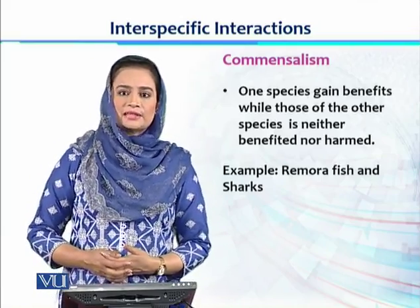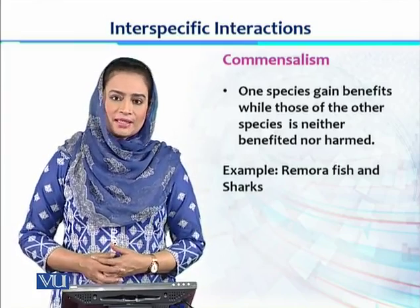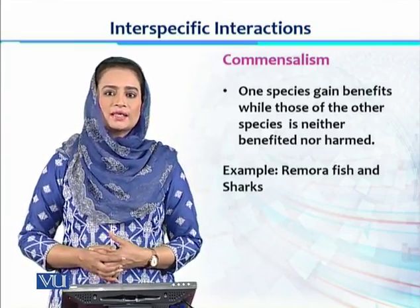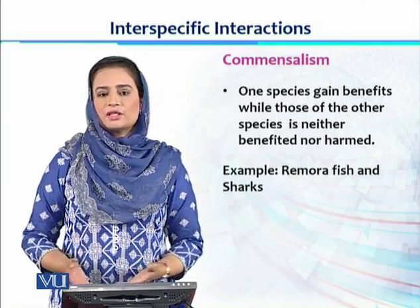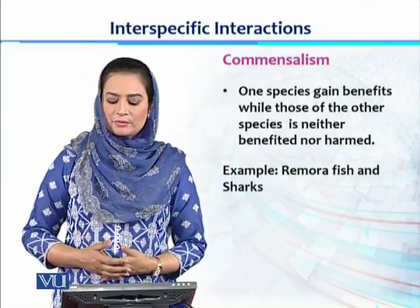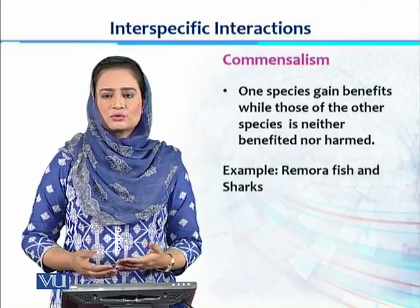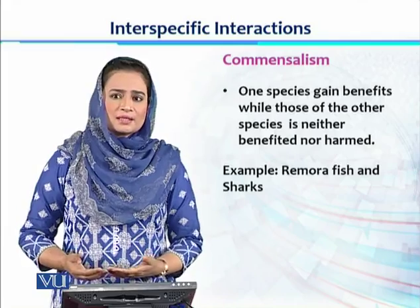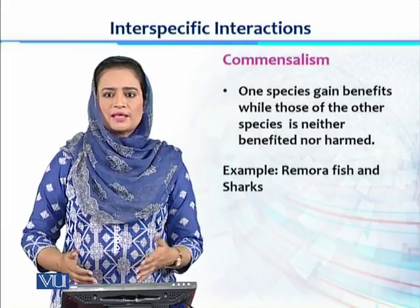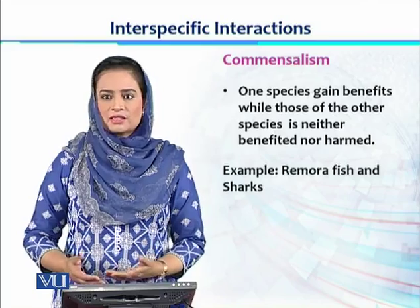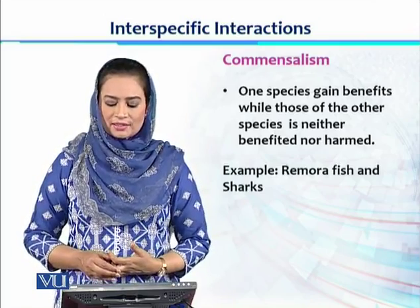The next type of symbiosis is commensalism. It is also a long-term relationship, but in this type not both members are getting the benefit — only one member is getting the benefit, while the other member is neither benefited nor harmed. An example is barnacles, which are attached to the body of tortoises, sharks, and whales. This is an example of facultative symbiosis, and most commensalism in animals shows facultative behavior.